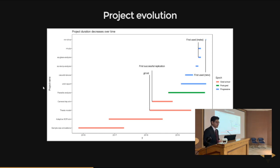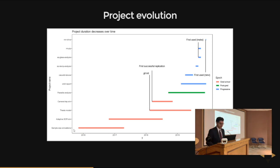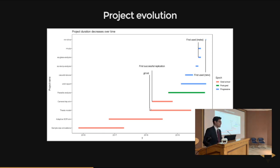I also want to show what the project evolution looks like over time. I got into grad school around fall 2015 — that's my very first project — then the second project, third project, and it wasn't until more than halfway through my program that I started using git. That came from the fact that I'd gotten one or two projects under my belt and figured out this was not very manageable.